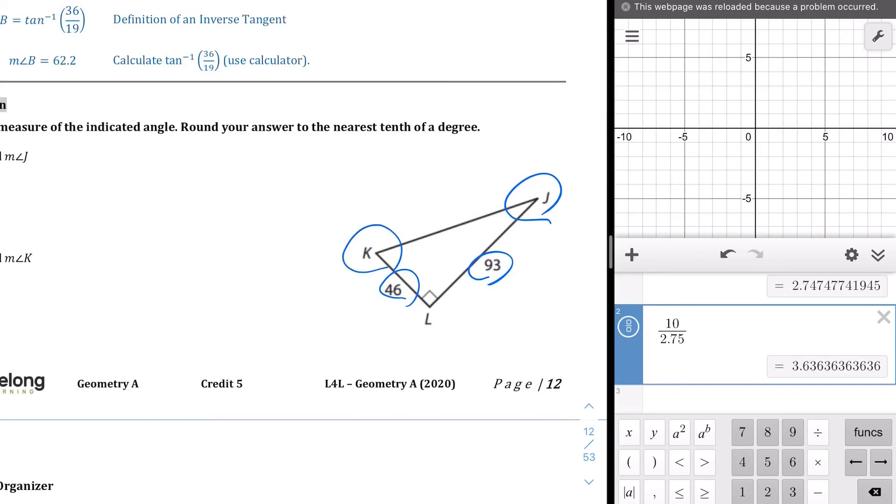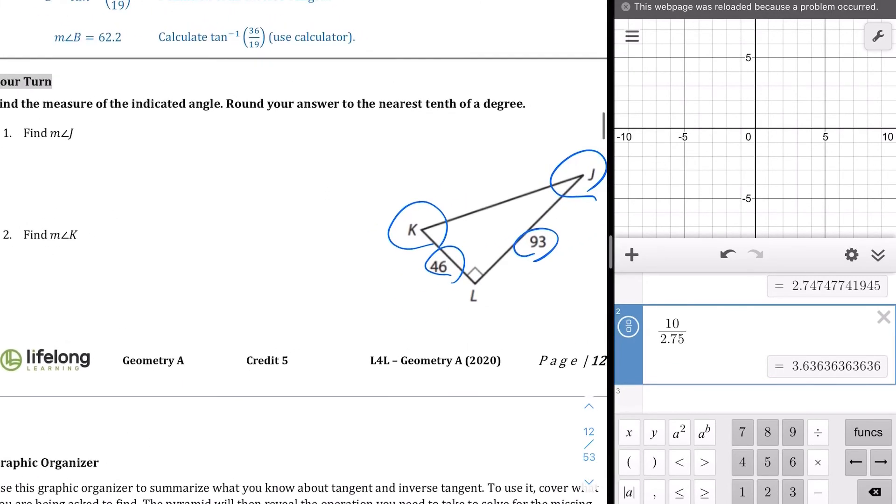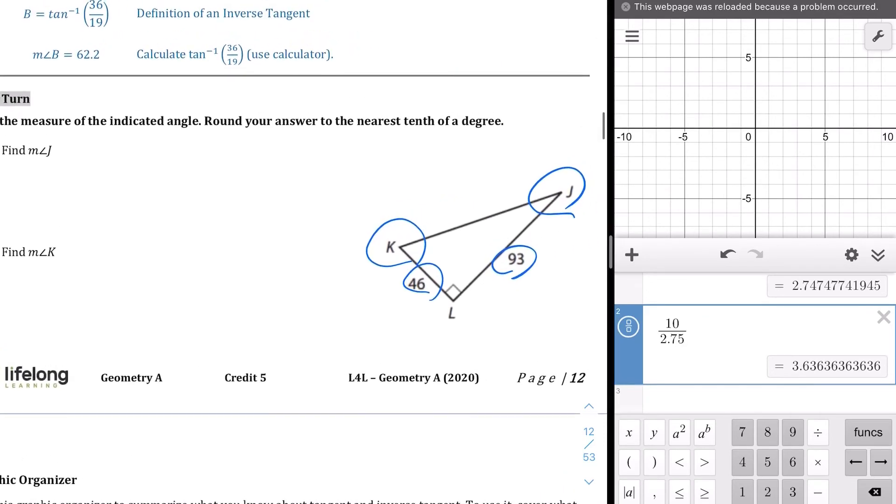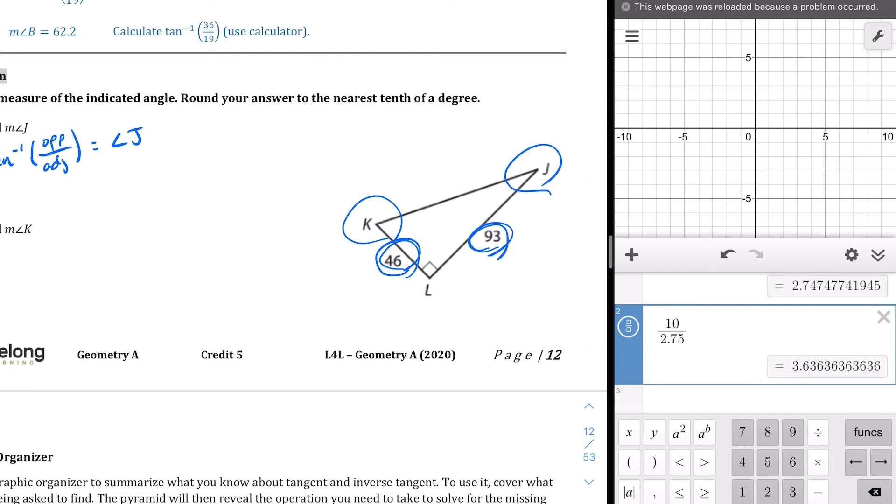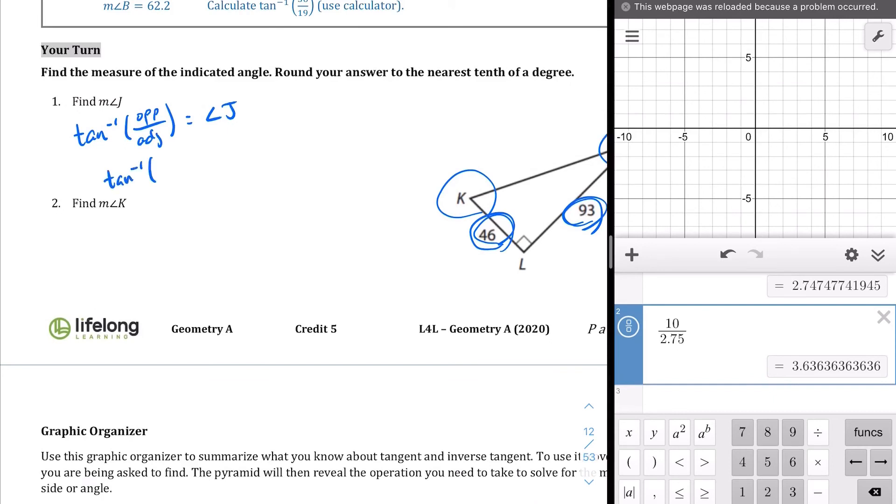In this case, it's going to be angles J and K. The first one we're looking for is angle J. So in order to find the angle, we're going to do the inverse tangent. The inverse tangent of the ratio, which is the opposite over the adjacent, is going to equal the measure of angle J. What is the opposite and adjacent in respect to angle J? Well, the opposite is 46, the adjacent is 93. So we're going to write inverse tangent of 46 over 93 equals angle J.